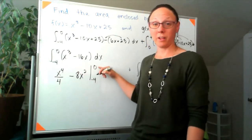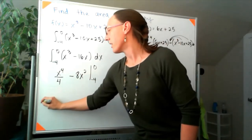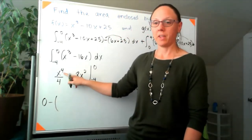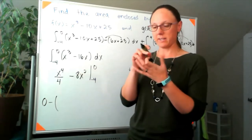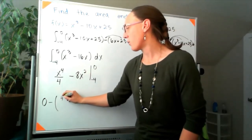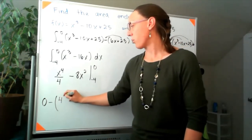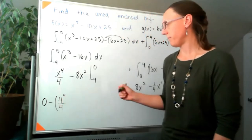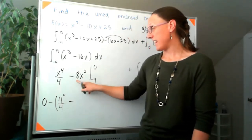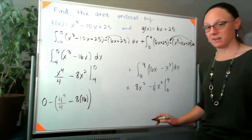I always plug in the top number first. When I plug in 0, everything is zero. Then I subtract plugging in -4: (-4)⁴/4 is (-4)⁴ divided by 4, and 8 times (-4)² is 8 times 16. The four negatives on (-4)⁴ loop back around to positive, so I'll treat it as 4⁴/4 = 4³ = 64. And 8 times 16: I can think of that as 2 times 4 times 16 = 2 times 64 = 128. We'll come back to the numbers in a minute.